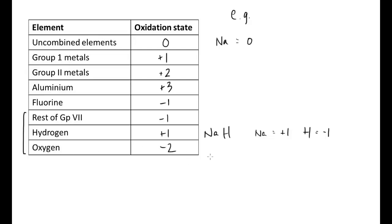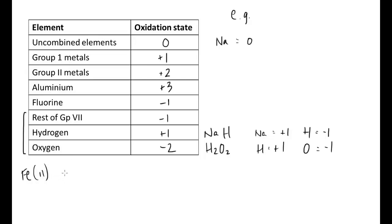Oxygen is always minus two, except in hydrogen peroxide where hydrogen trumps the oxygen with plus one, so oxygen drops down to minus one rather than the usual minus two. Other exceptions include transition metals — for example, iron(II) where the Roman numeral two dictates the oxidation state, so iron exists as plus two in the compound. Similarly chromium(III) exists in the plus three state whether as an ion or within a compound.